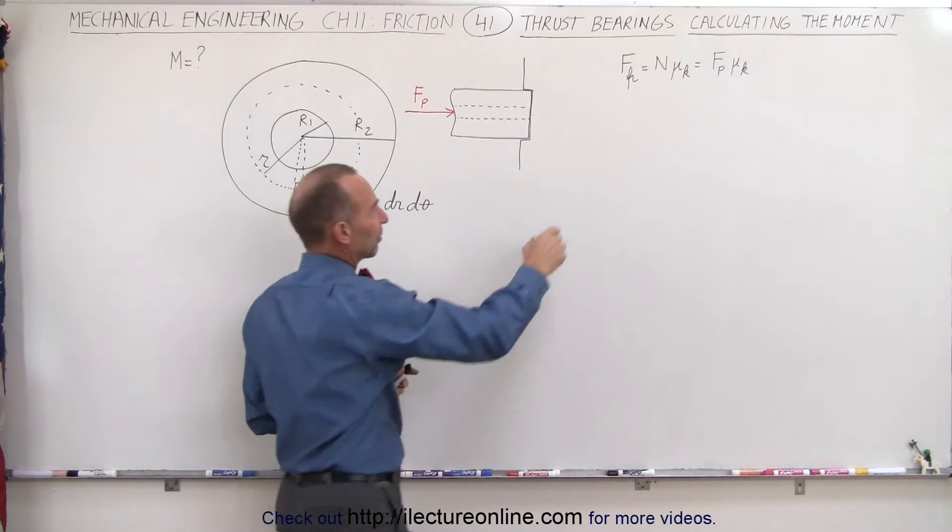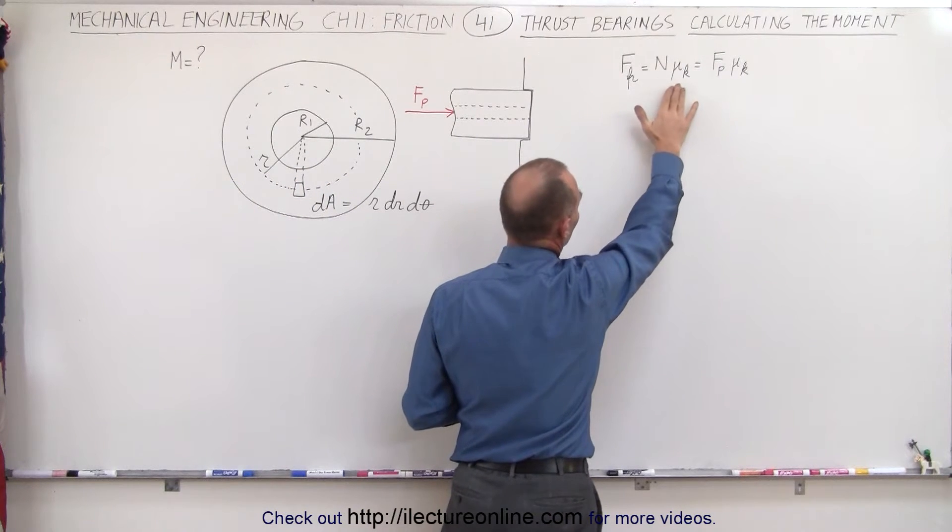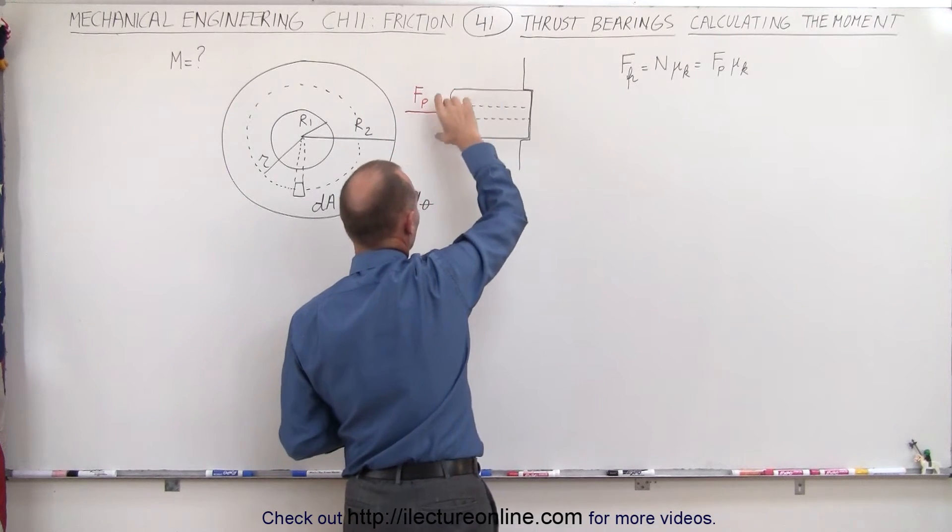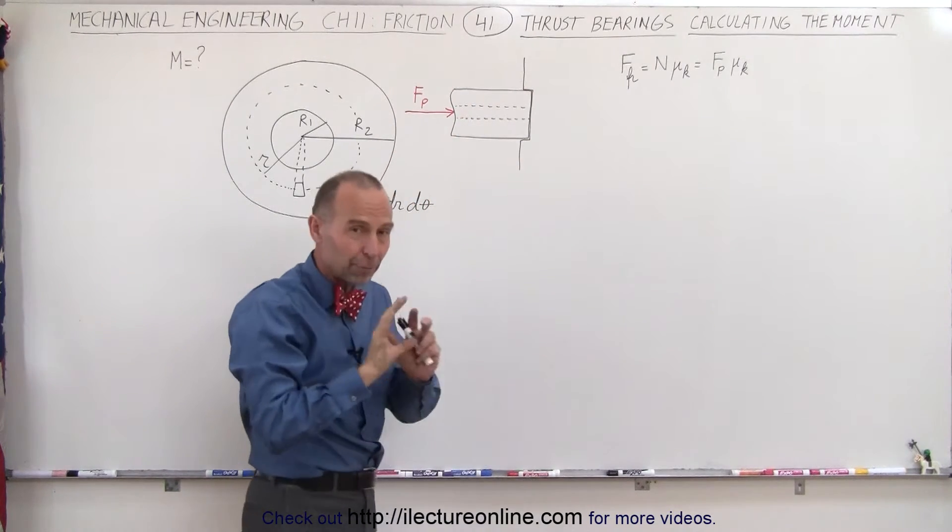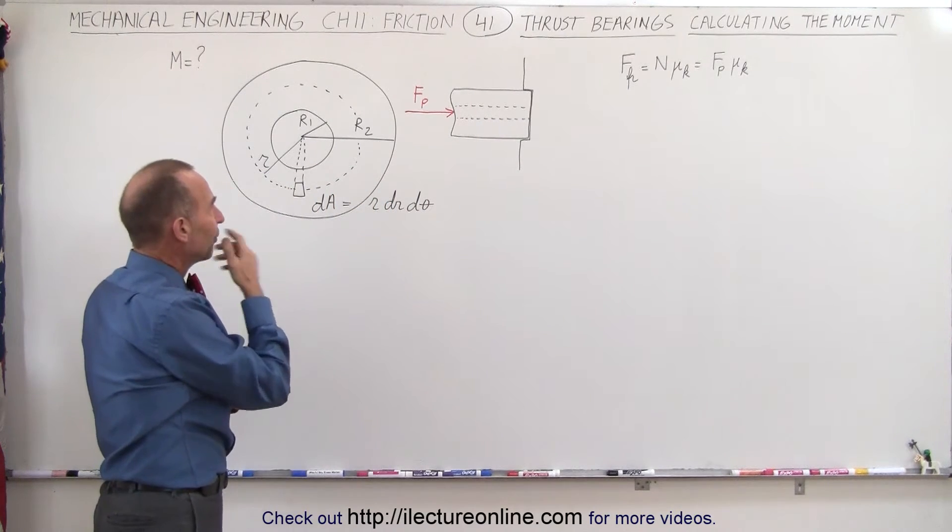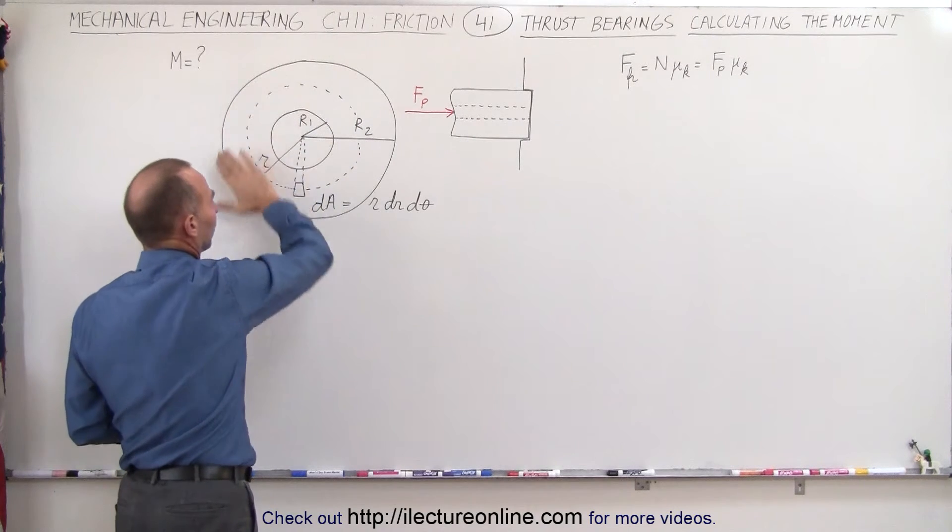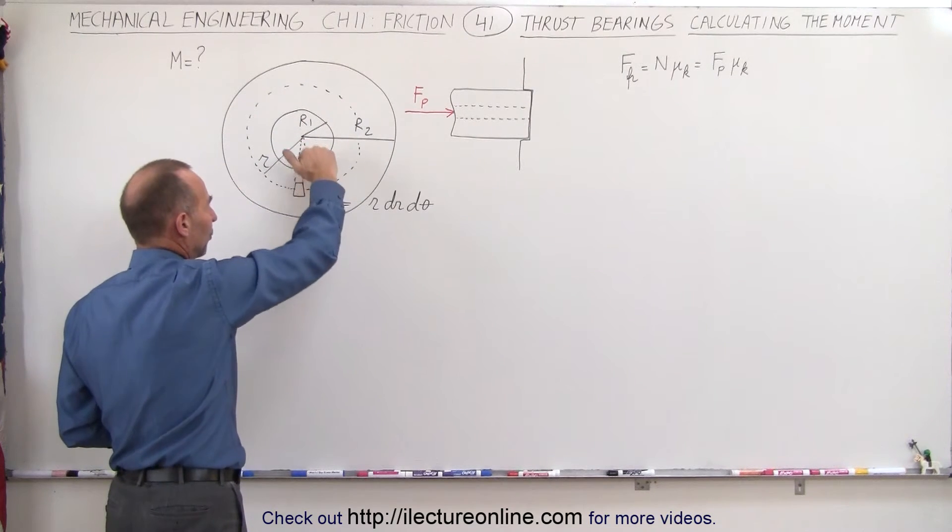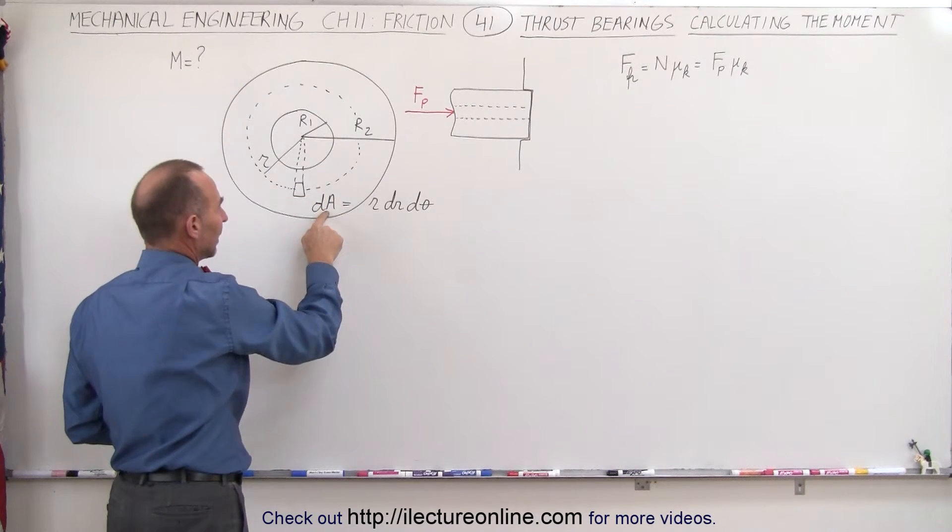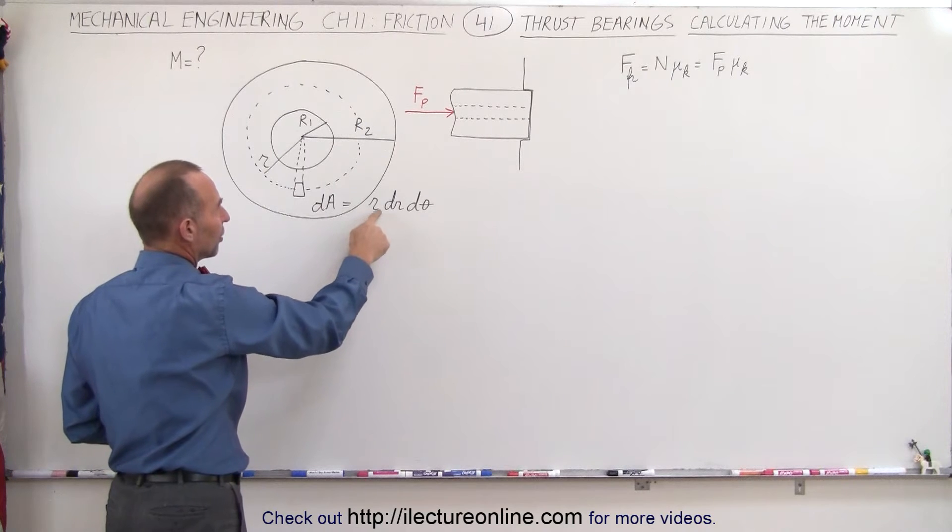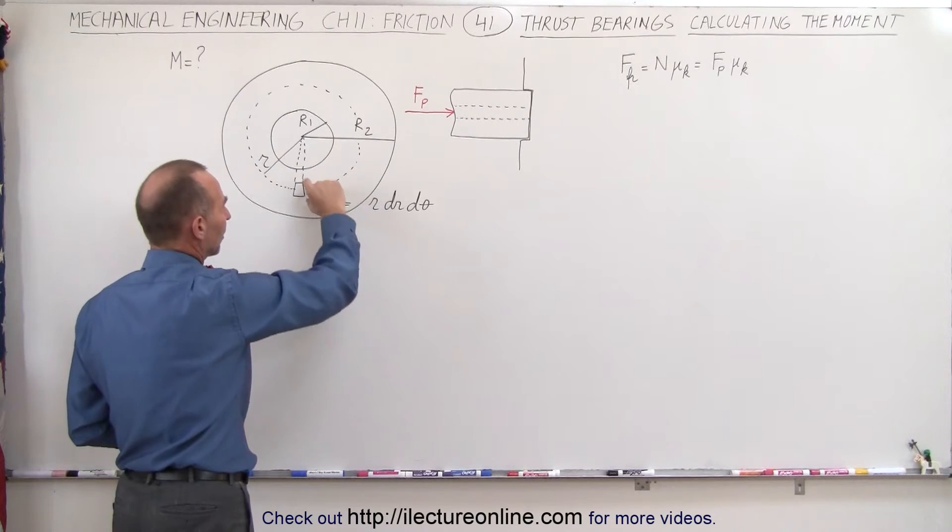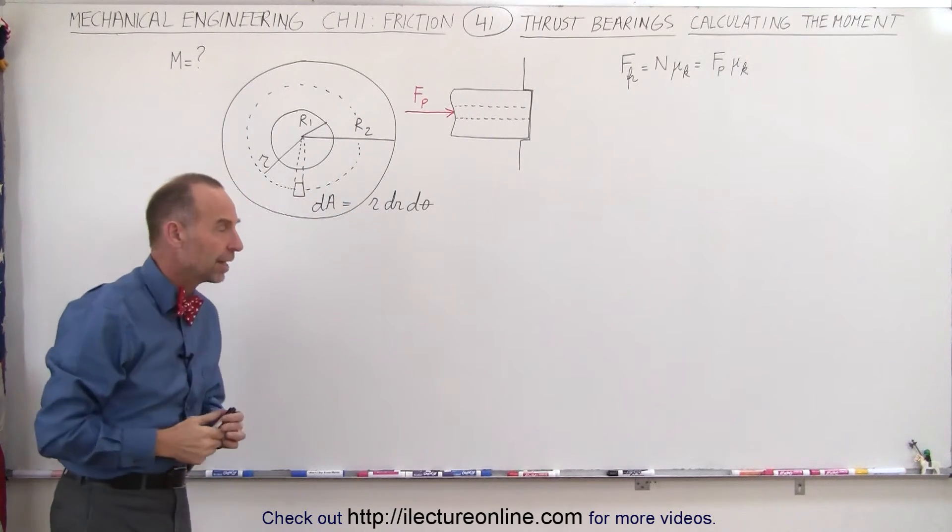Keep in mind that the friction force is always calculated to be the normal force times mu. In this case, the normal force would be the force applied. I call this f sub p for the force of the push, pushing the bearing into the housing right there. So if we're going to integrate across the surface starting from R1 to R2 because that's the range of the radius, we'll take a small little surface element called dA, which in polar coordinates is R dR times d theta. R d theta is the width here and dR is the change in the radius. So that would be R dR d theta.